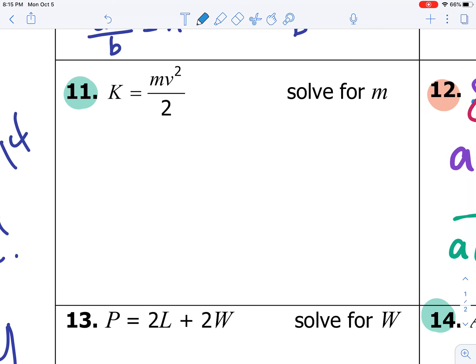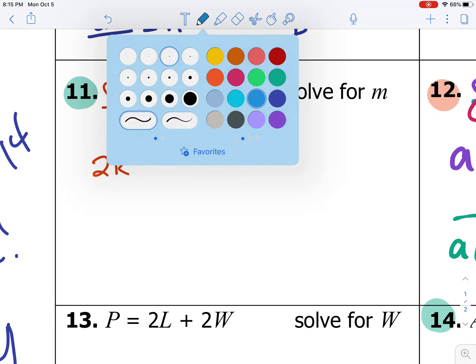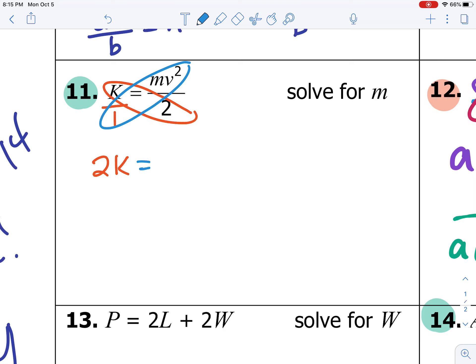Looking at number 11, all I need to do to this problem is put K over 1 and cross-multiply. So K times 2 is 2K. 1 times MV squared is MV squared. So now that the fractions are gone, I'm looking for what I'm solving for. I'm solving for M. M and V squared are being multiplied together. So to undo multiplication, we divide both sides by V squared. Therefore, 2K over V squared equals M, or M equals 2K over V squared.